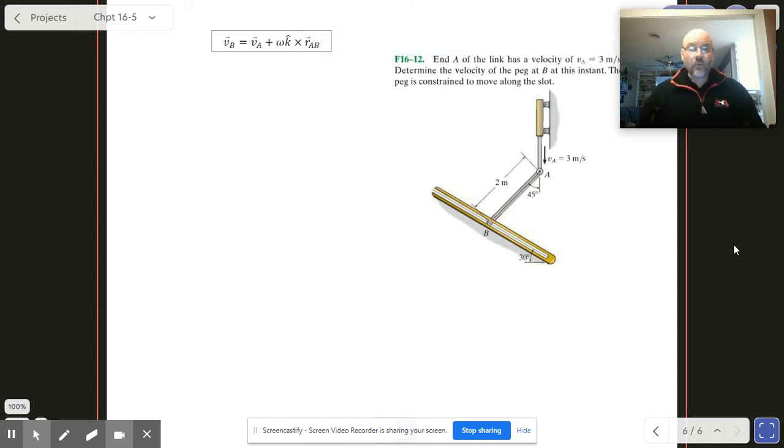Okay guys, this is the last one in this section. The only thing that's different about this one is when we get down to the very end we see that B is constrained to move in a particular direction. We'll handle that right at the end but let's go ahead and proceed like we normally do.